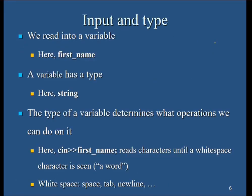Regarding input and type — we read something into a variable. The variable 'first name' has to have a type, which is string. String means a combination of characters. The type of a variable determines what operations we can perform on it. For example, if it is integer, we can add, subtract, or divide integers.